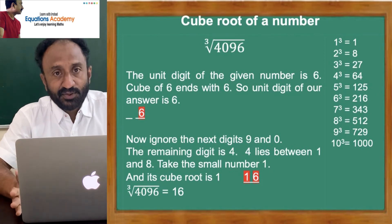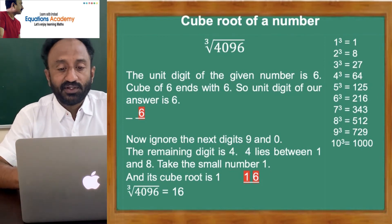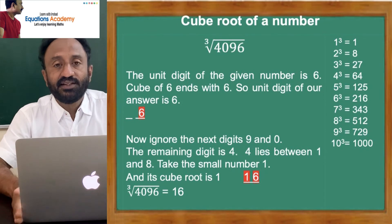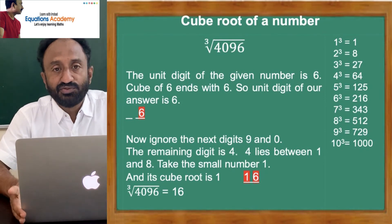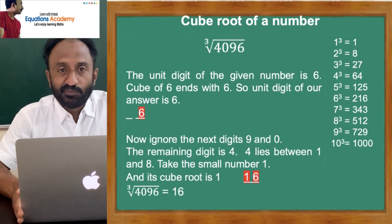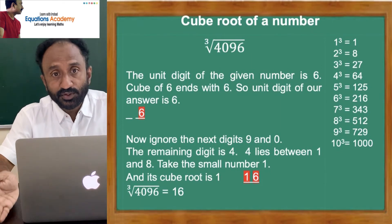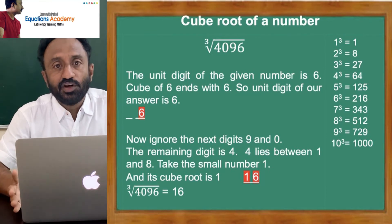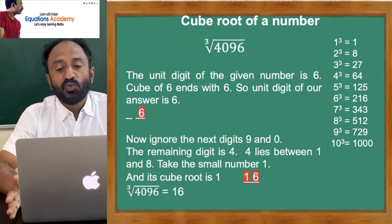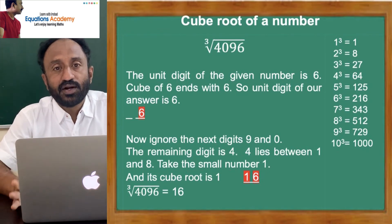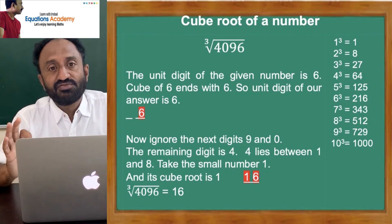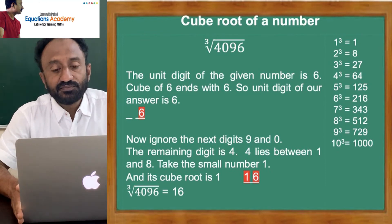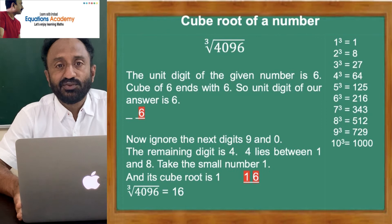What is the next step? 6 is gone. Now forget 9 and 0 — ignore them. Take the first digit, 4. We know 1 cube is 1 and 2 cube is 8. So 4 lies between 1 and 8, meaning 4 lies between the cubes of 1 and 2. Choose the smaller number — take 1. Put it as the tens place of our answer. So our answer is 16. Cube root of 4096 is 16.